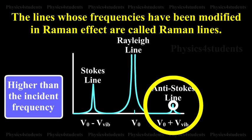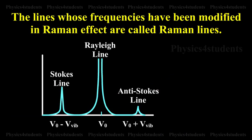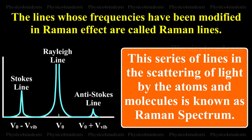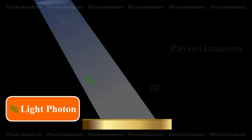What is Raman Spectrum? This series of lines in the scattering of light by the atoms and molecules is known as Raman Spectrum. The Raman Effect can be easily understood by considering the scattering of photons of the incident light with the atoms or molecules.